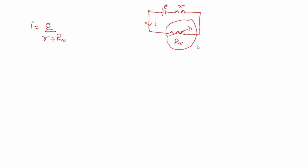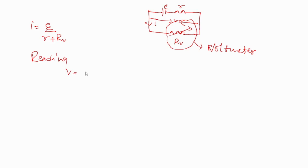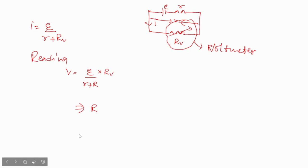The reading of the voltmeter will be the potential difference across it. This potential difference V equals I times R, which means V equals E upon (small r plus capital R) times R. This implies that V is less than E.